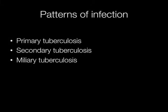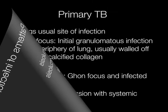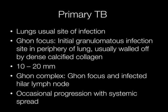There are three main patterns of infection: primary and secondary tuberculosis and miliary tuberculosis. The lung is the usual site of primary TB infection. The initial granulomatous infection site is at the periphery of the lung. This is usually walled off by dense calcified collagen which can be seen on an X-ray. This is called a Ghon focus, usually about 10 to 20 millimetres in diameter. If there is an infected hilar lymph node draining the Ghon focus then this is called a Ghon complex.